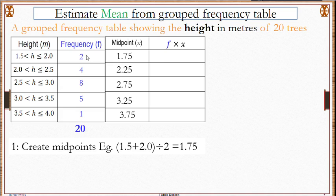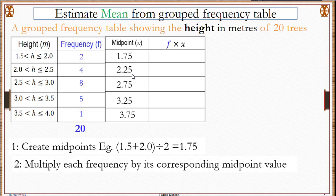To find fx we multiply each midpoint by its corresponding frequency. We work through each of them one by one.